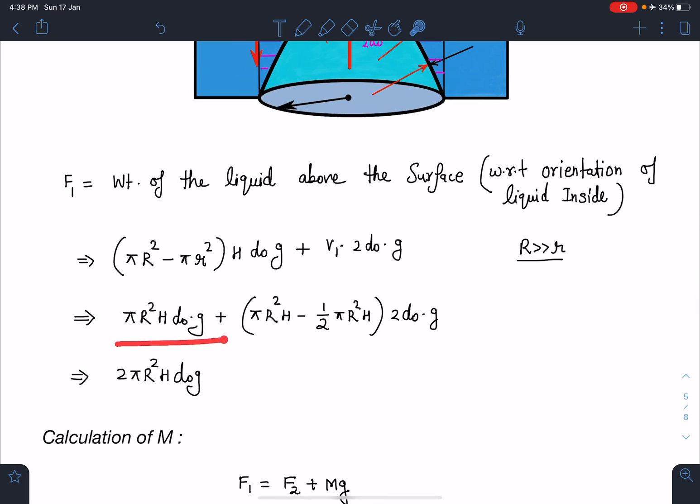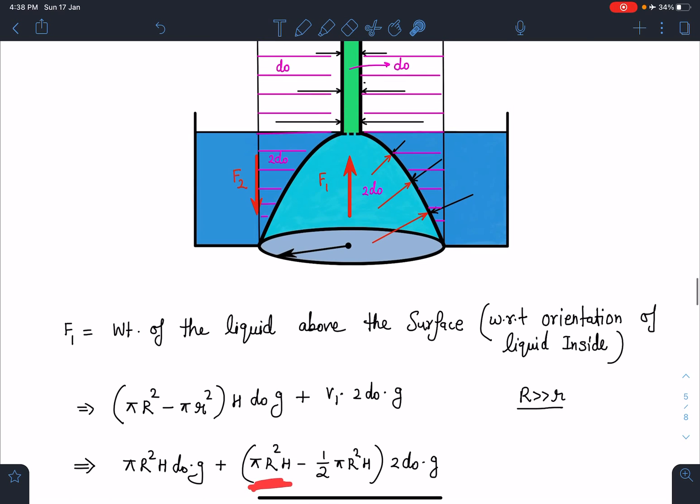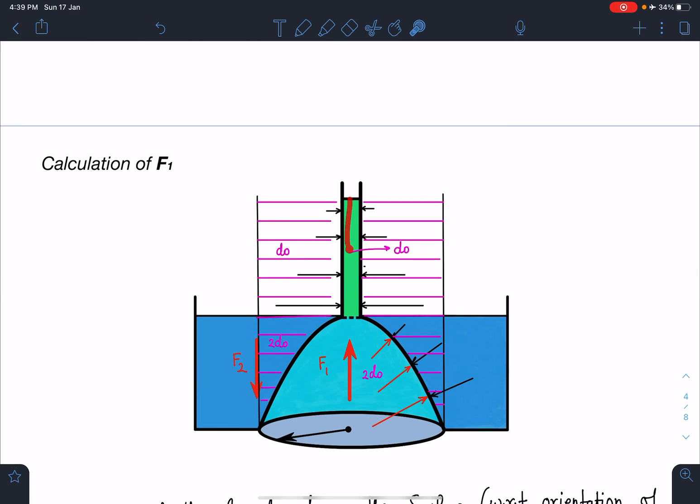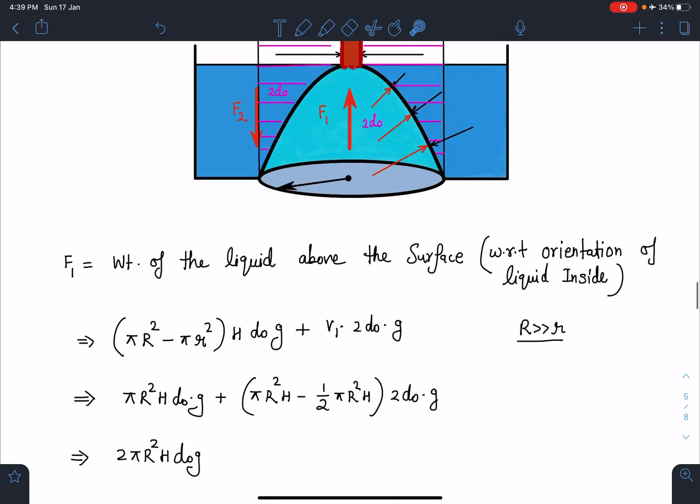You can see here this will reduce to pi R squared H d naught g plus pi R squared H, this cylinder here, this cylinder minus this paraboloid, minus half pi R squared H into 2d naught into g. When we simplify this, we are going to get a very nice answer here: 2 pi R squared H d naught g. Just see this: this value is pi R squared H d naught, but if you just add this very thin funnel or thin tube here and take it to a greater height, this will make this force double. Isn't it crazy?